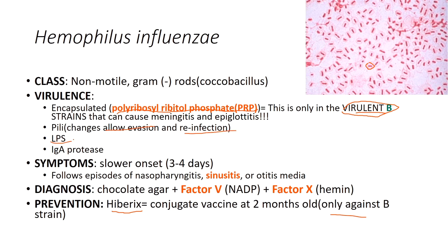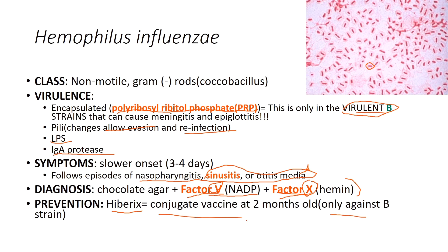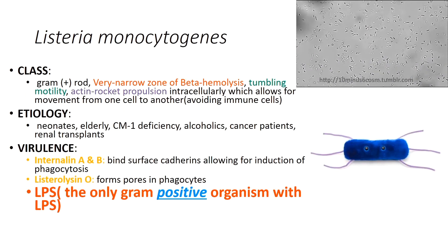To differentiate H. influenzae from Strep pneumo, use the gram stain — they look completely different. H. influenzae grows on chocolate agar requiring factor V (nicotinamide, NAD) and factor X (hemin). It is another fastidious organism. The Hib vaccine is given starting at two months old. As future physicians, emphasize to parents the importance of vaccinating their children against these potentially fatal infections.